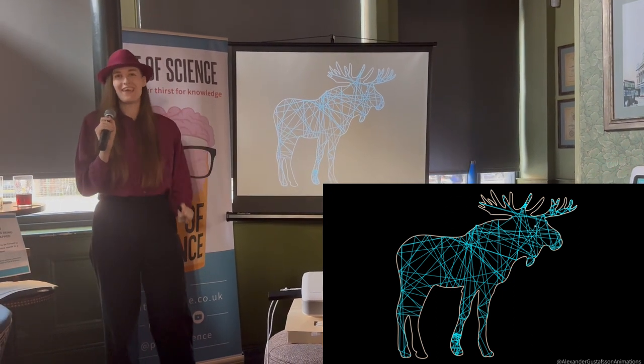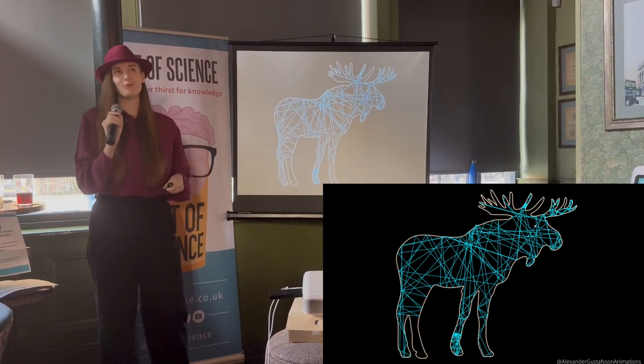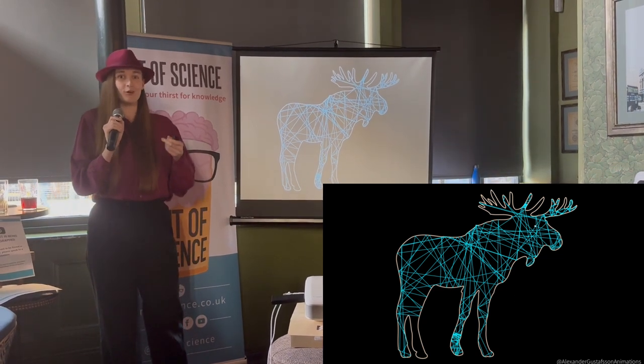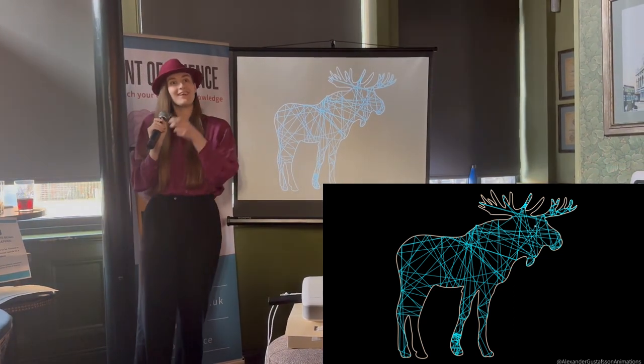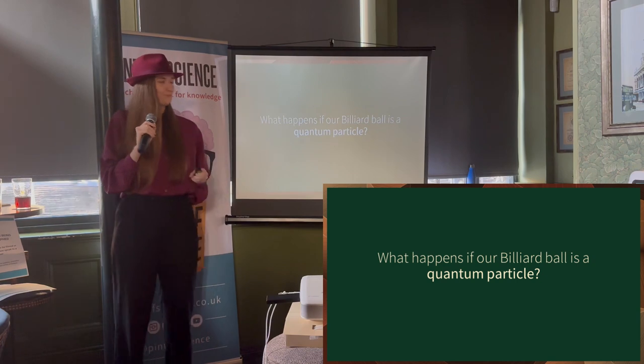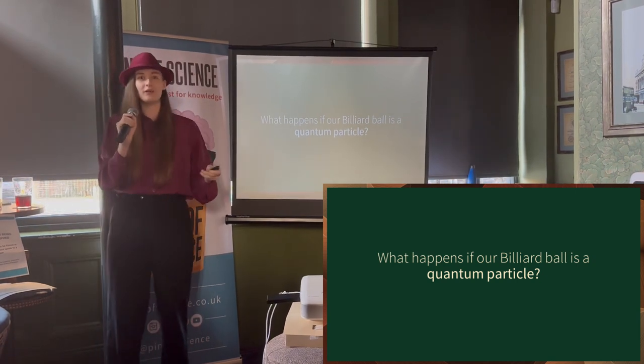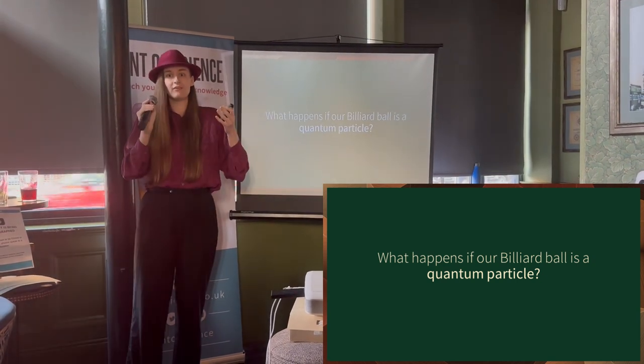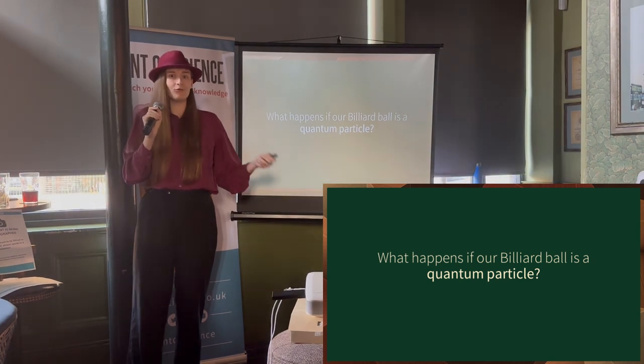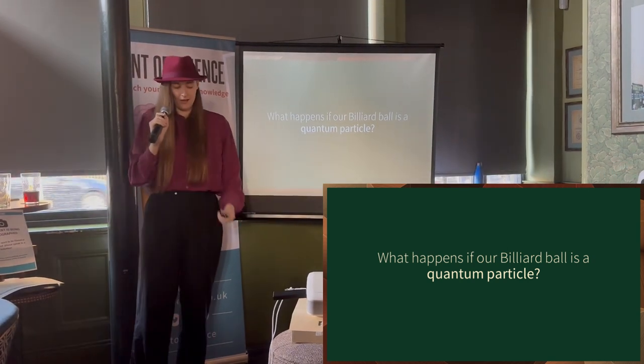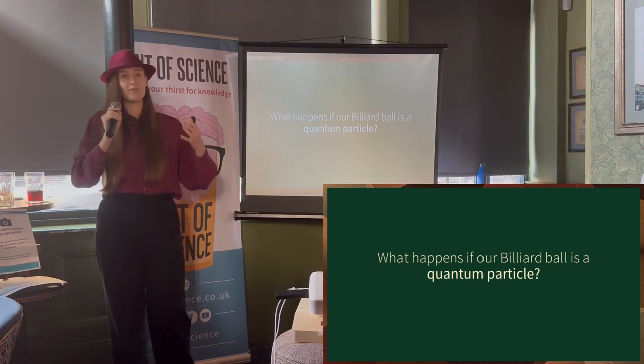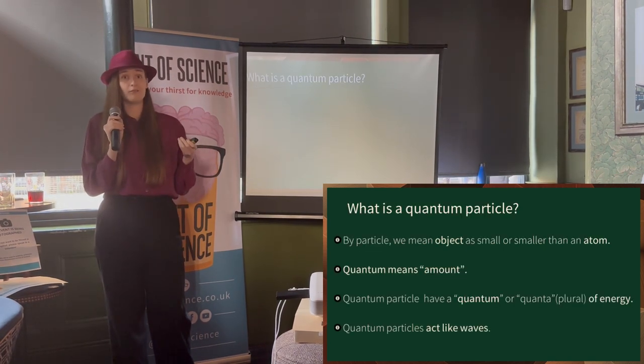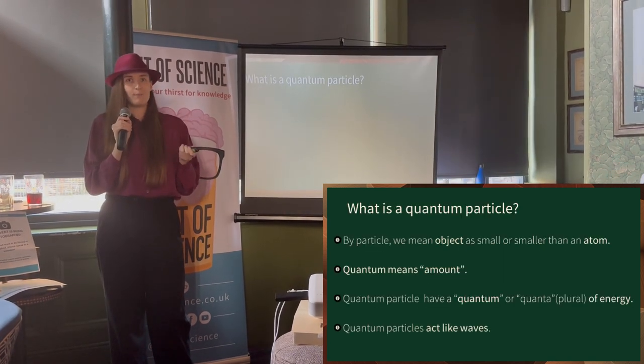But chaotic motion just means that if you want to hit two balls in very similar directions at very similar angles, but they have the tiniest difference in the angle, the motion will be completely different. I like to just think of chaos as looking a bit messy. So this is classical billiards. But we're not here for classical billiards. We're here for quantum billiards.